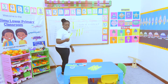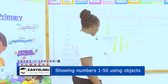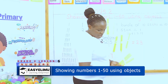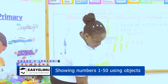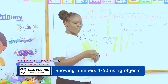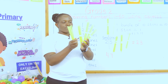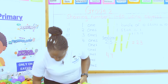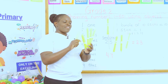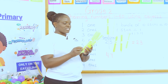What if I'm told to show 47 using bundles of sticks? Each bundle is one bundle of ten sticks. How many bundles of ten do I need? I need four. One, two, three, four. And how many single sticks do I need? One, two, three, four, five, six, seven. So I have four bundles of ten sticks and seven sticks — that gives me 40, 41, 42, 43, 44, 45, 46, 47.